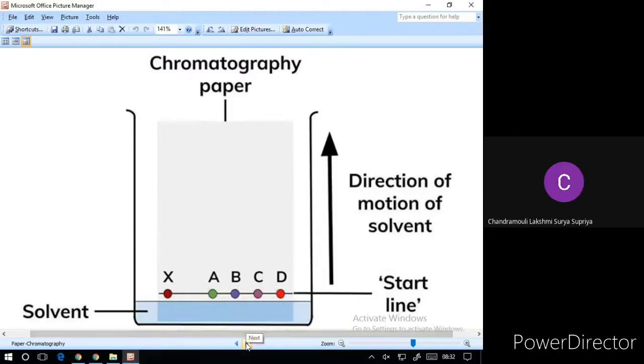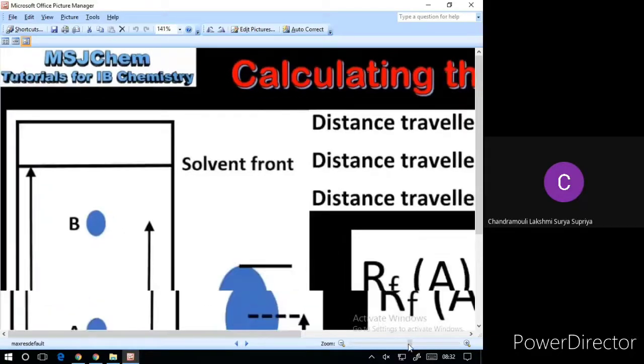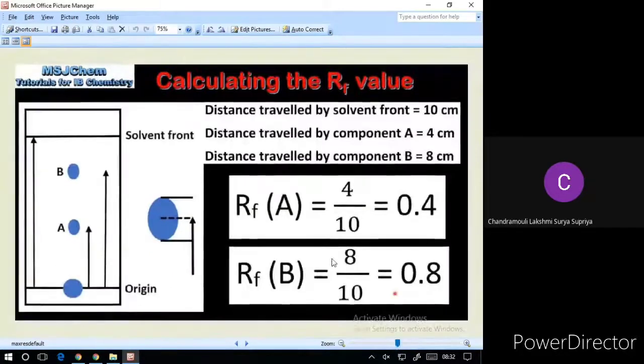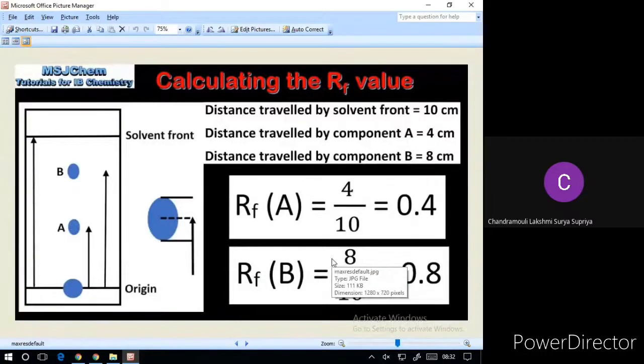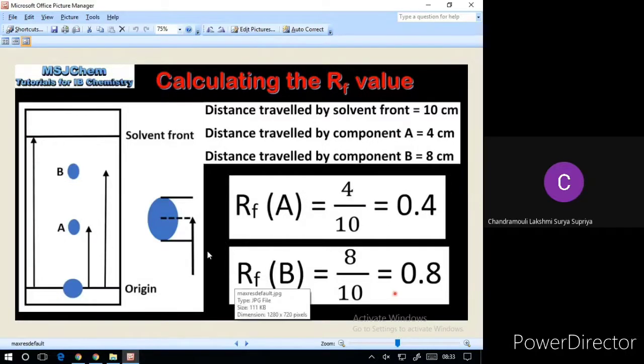The retention factor, Rf, may be defined as the ratio of the distance travelled by the solute to the distance travelled by the solvent. If the Rf value is 0, the solute remains in the stationary phase and is immobile. If the Rf value equals 1, the solute has no affinity for the stationary phase and travels with the solvent front.